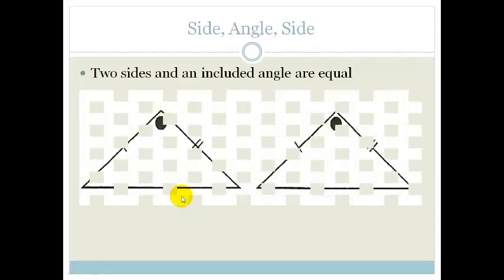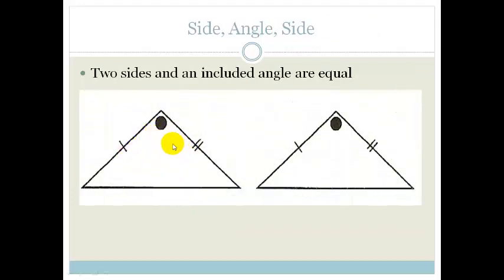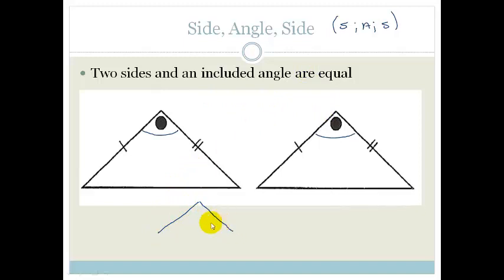The next case is side, angle, side — SAS — where you've got two sides and an enclosed angle. If the two sides are equal but the angle is not the enclosed angle between them, then that is not congruent. It has to be an enclosed angle. So it's side, angle, side.